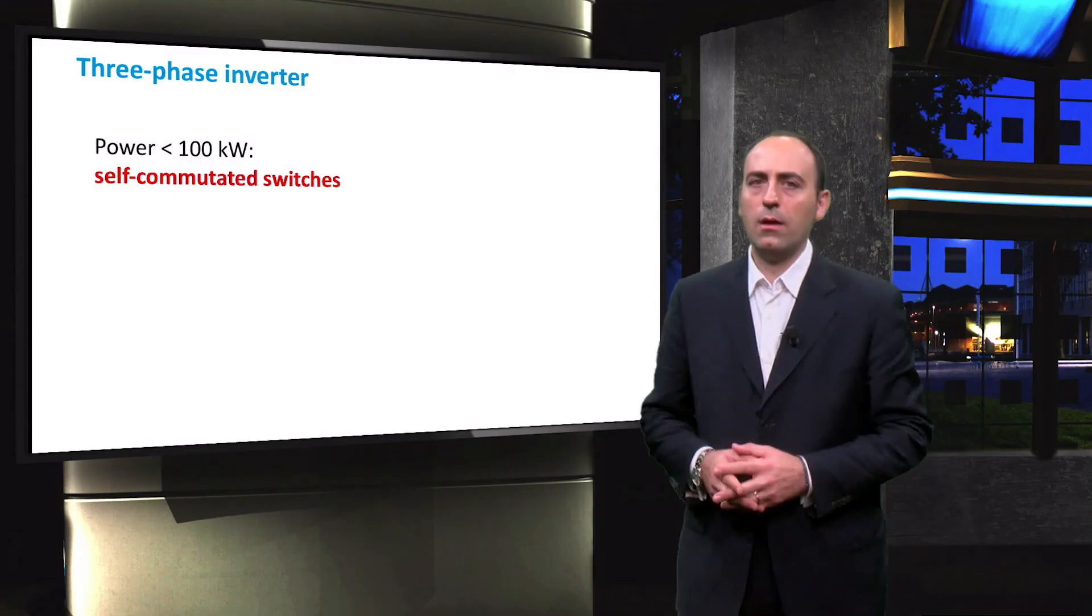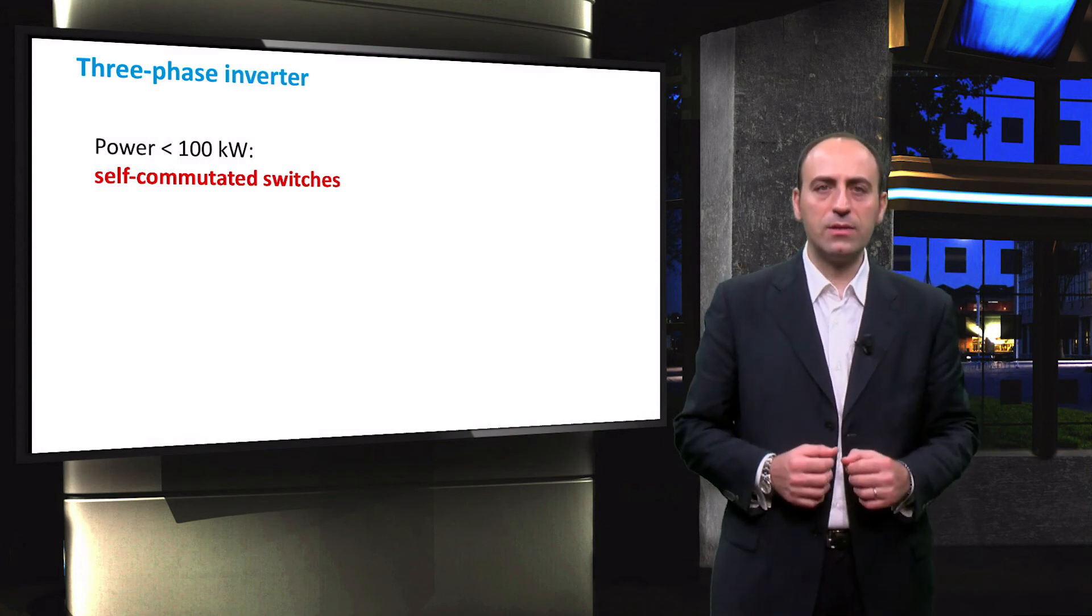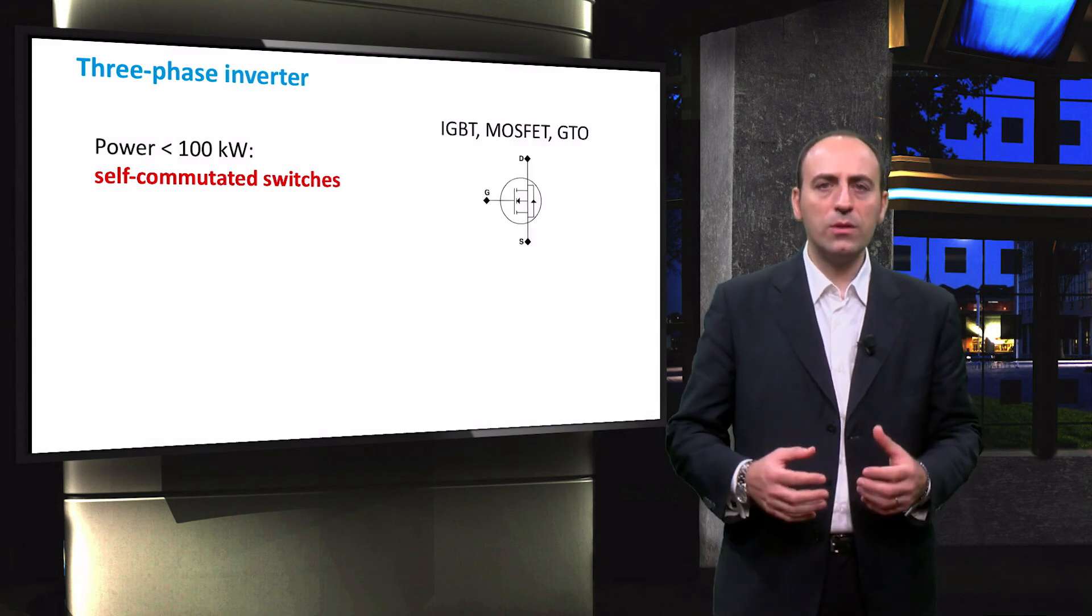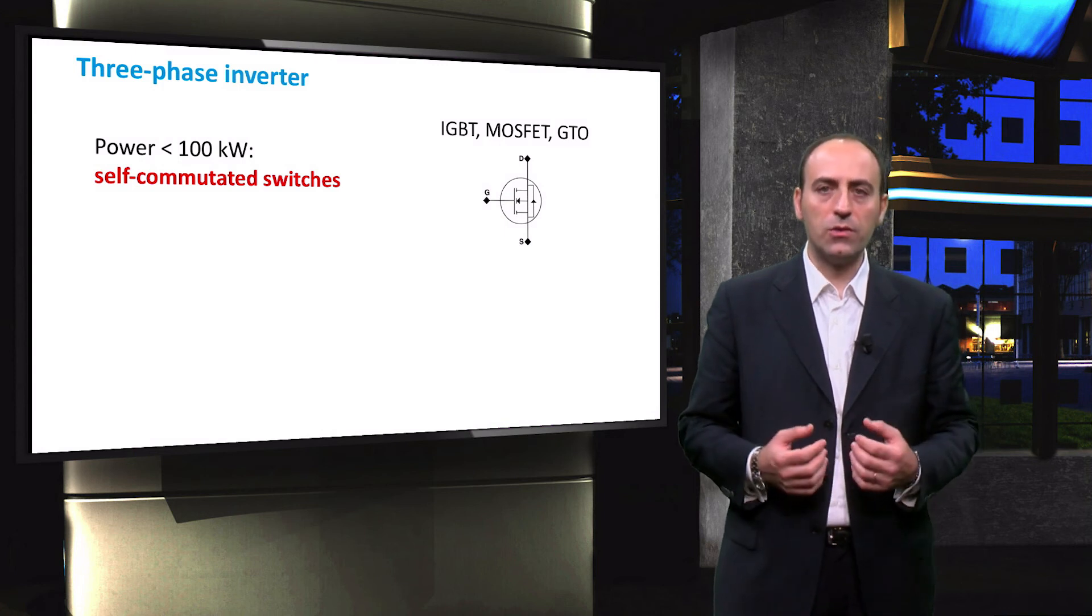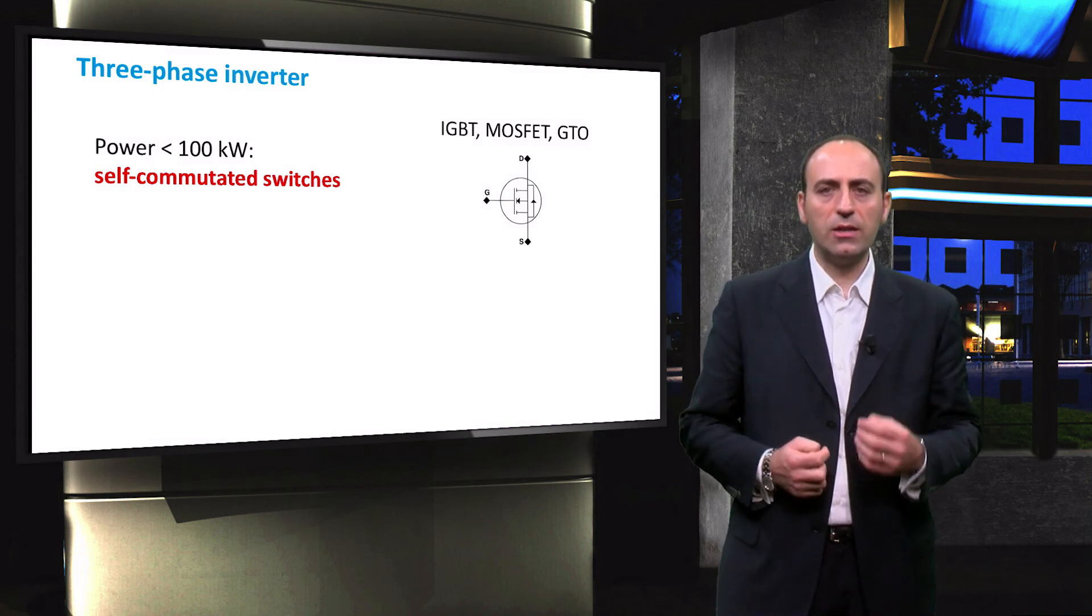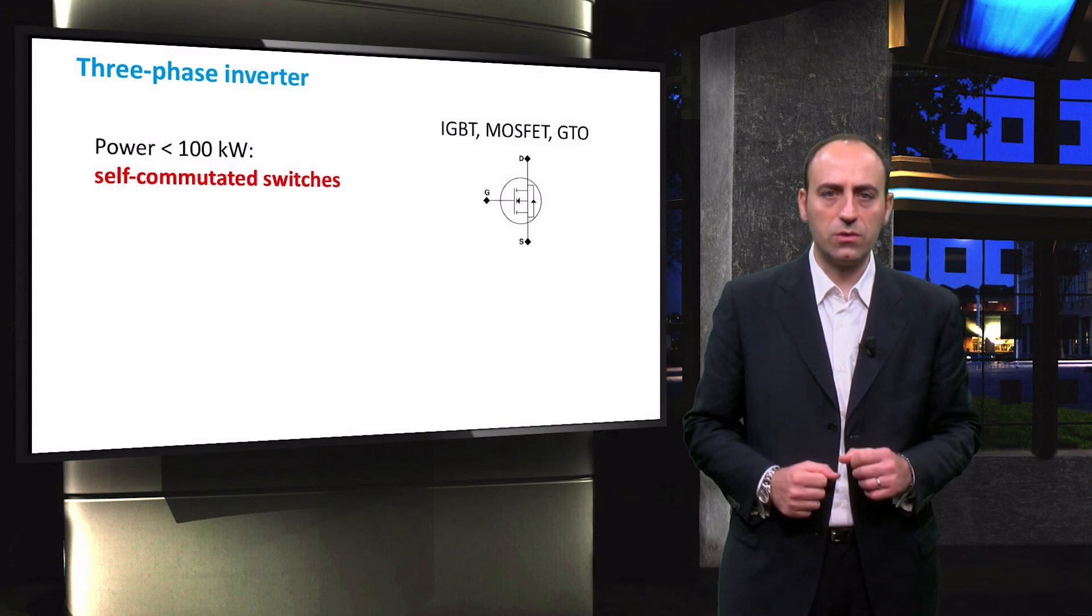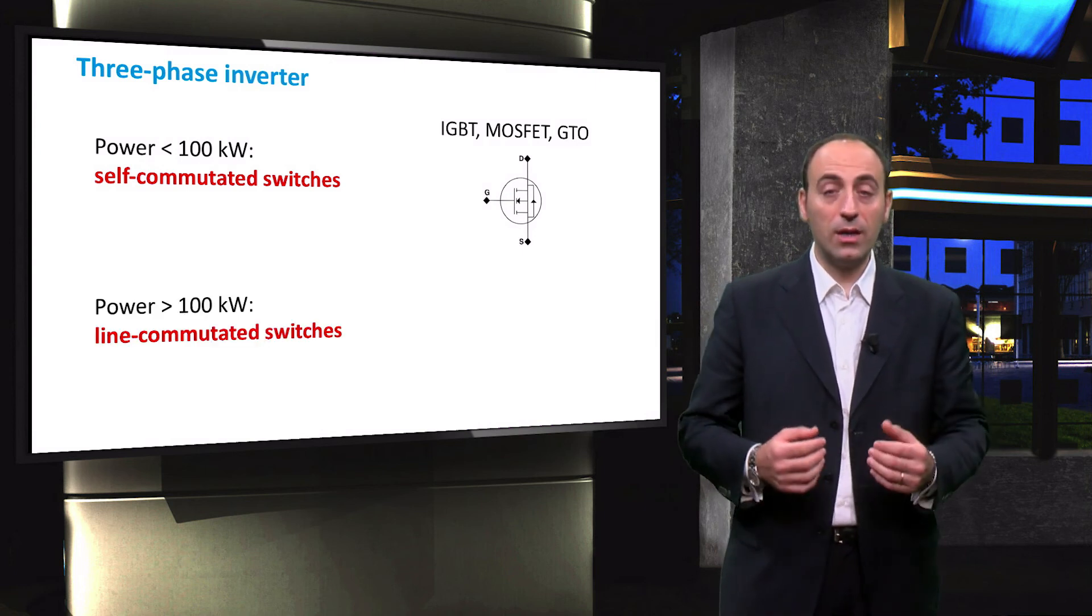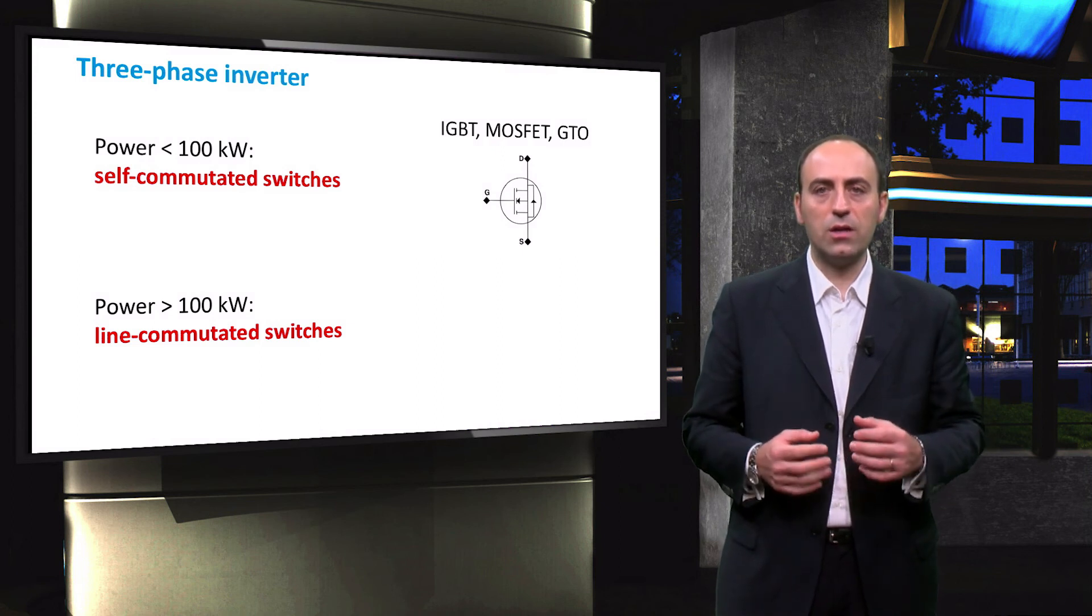If the power converted from DC to AC is less than 100 kW, the switching devices used are usually self-commutated ones. Among these devices, we can mention the IGBT, the MOSFET and the GTO, among others. These devices are characterized by very fast switching and feature a controller that takes care of the opening and closing of the transistors.